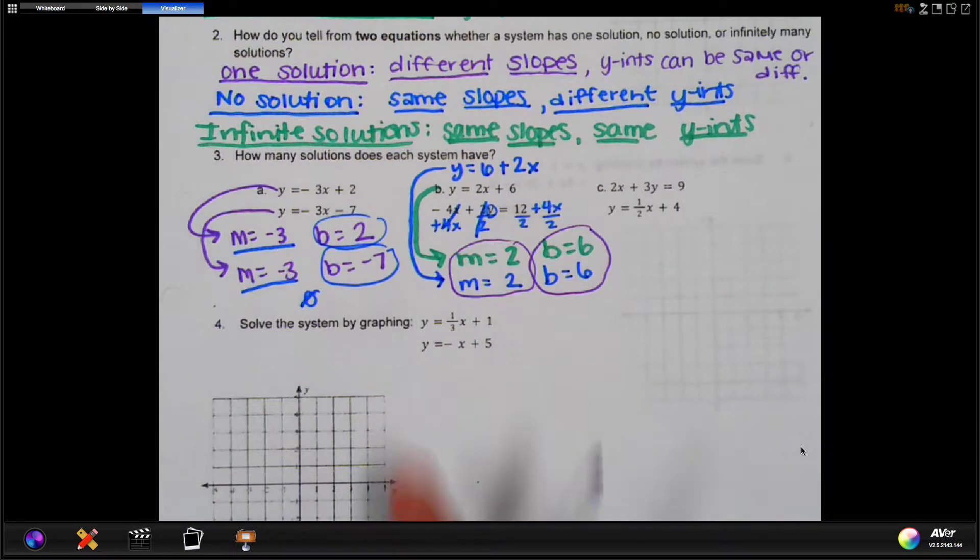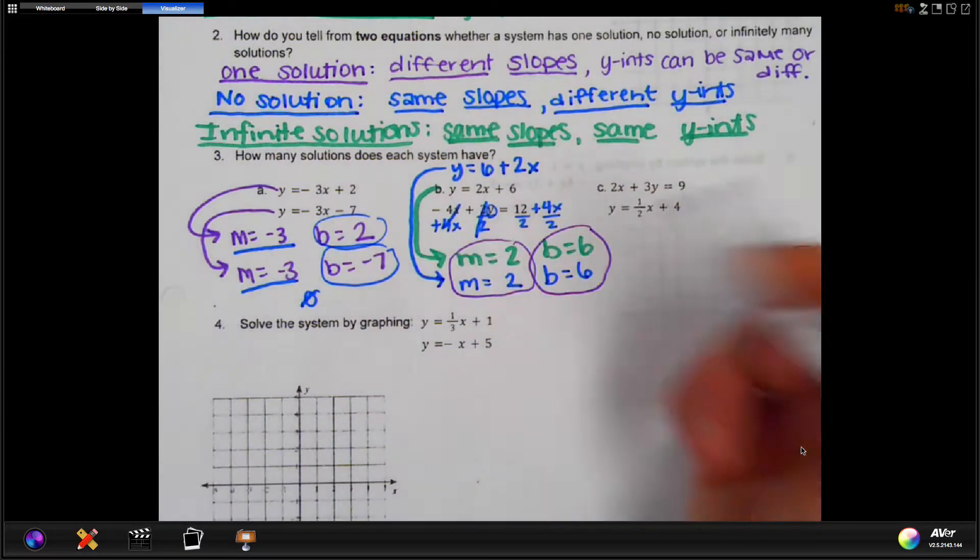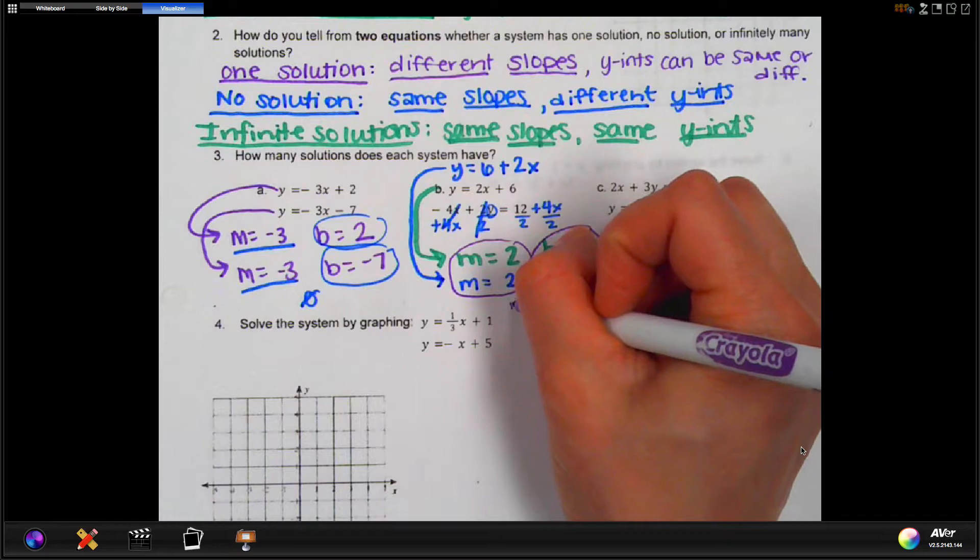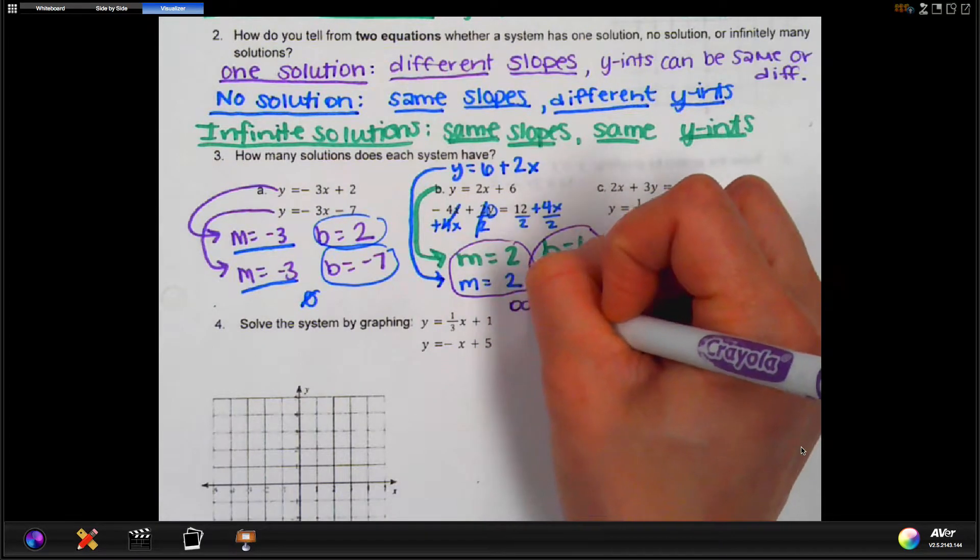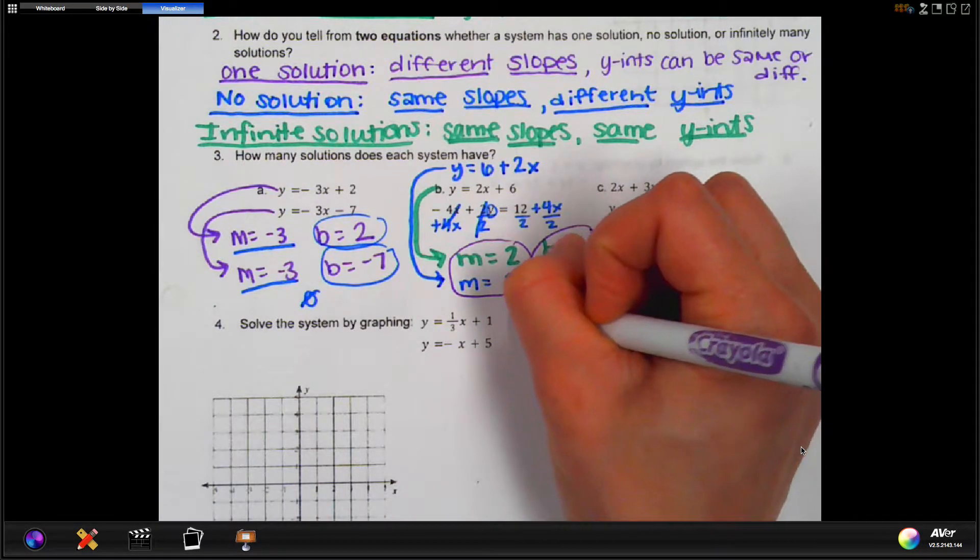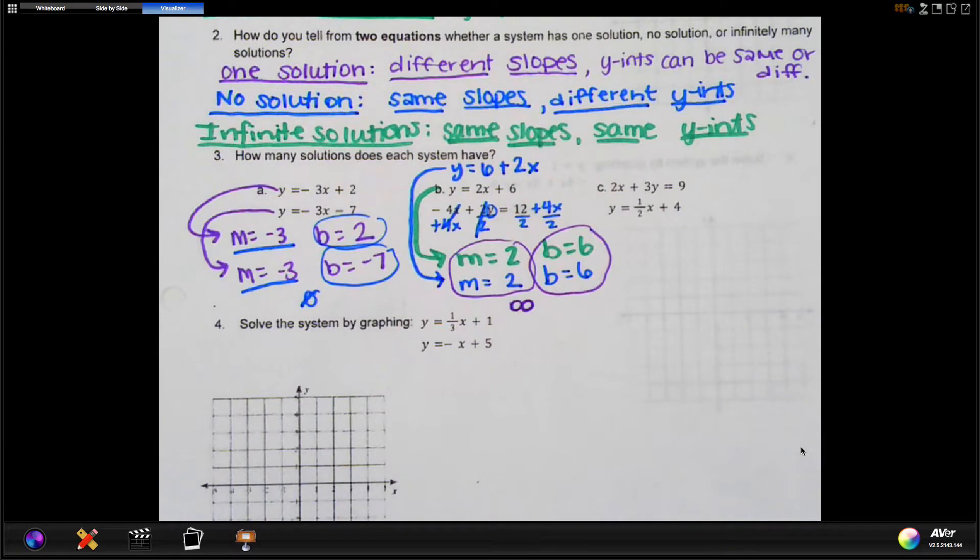So that means that, according to our notes above, same slope, same y-intercept, this is going to have infinite solutions here. All right? And so you can use that sideways 8 as a symbol, or you can write that out. All right, I'm going to leave part C for you to try on your own.